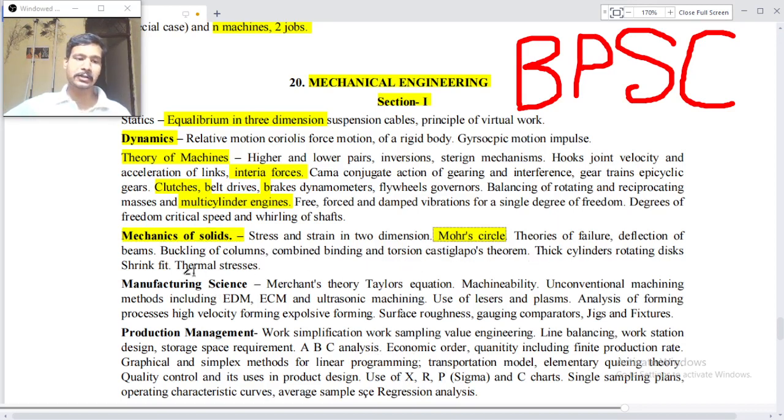Theories of failure, deflection of beams, buckling of columns, combined bending and torsion, Castigliano's theorem, thick cylinders, rotating disks, shrink fit, and thermal stresses. Manufacturing science - Merchant's theory, Taylor's equation, machinability.